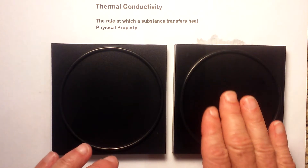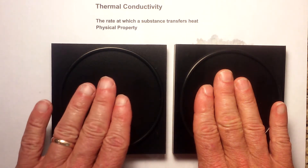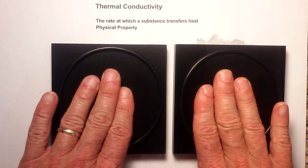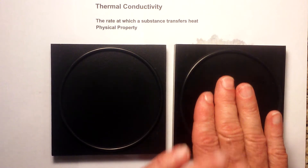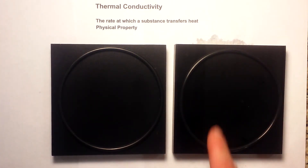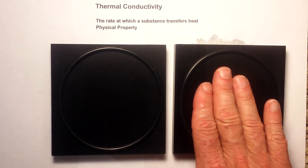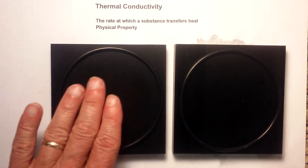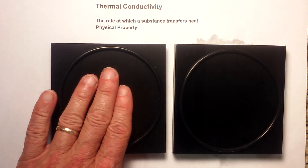The interesting thing is if you touch the aluminum, it actually feels much cooler than this plastic block. That is because of the high conductivity — my hand is warmer than the aluminum block, so it is quickly transferring heat to the aluminum, while the plastic does not transfer heat so it feels warmer.